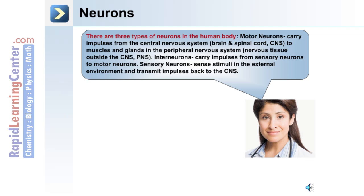Motor neurons carry impulses from the central nervous system to muscles and glands in the peripheral nervous system. Interneurons carry impulses from sensory neurons to motor neurons. Sensory neurons sense stimuli in the external environment and transmit this information in the form of impulses back to the central nervous system.